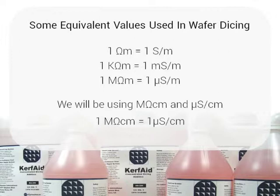Today, we will be using megaohm centimeters and microsiemens per centimeter. The relationship between megaohm centimeters and microsiemens per centimeter is the same as that of megaohmmeters and microsiemens per meter — that is to say that one megaohm centimeter is equal to one microsiemens per centimeter.